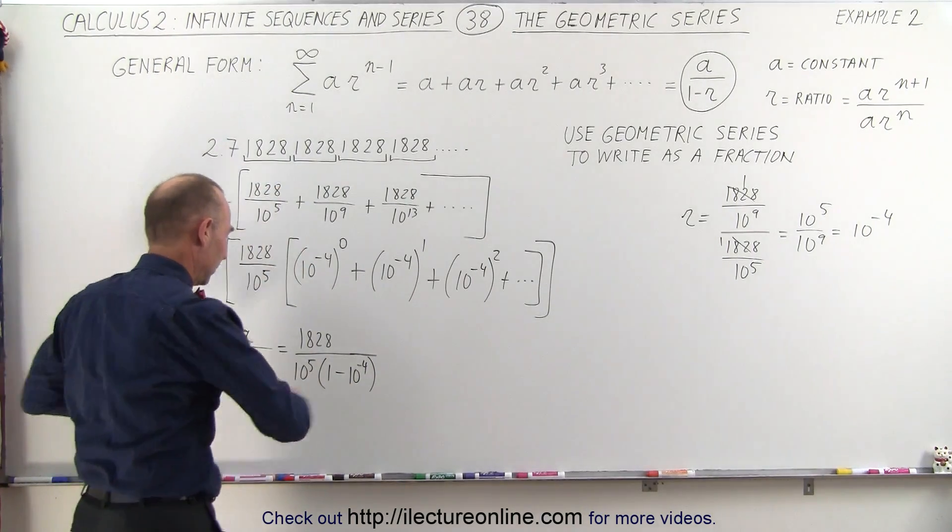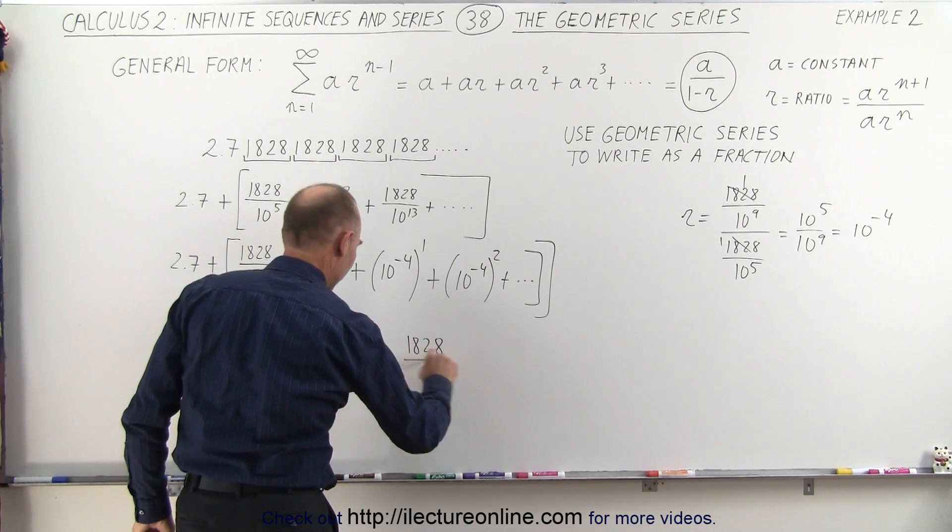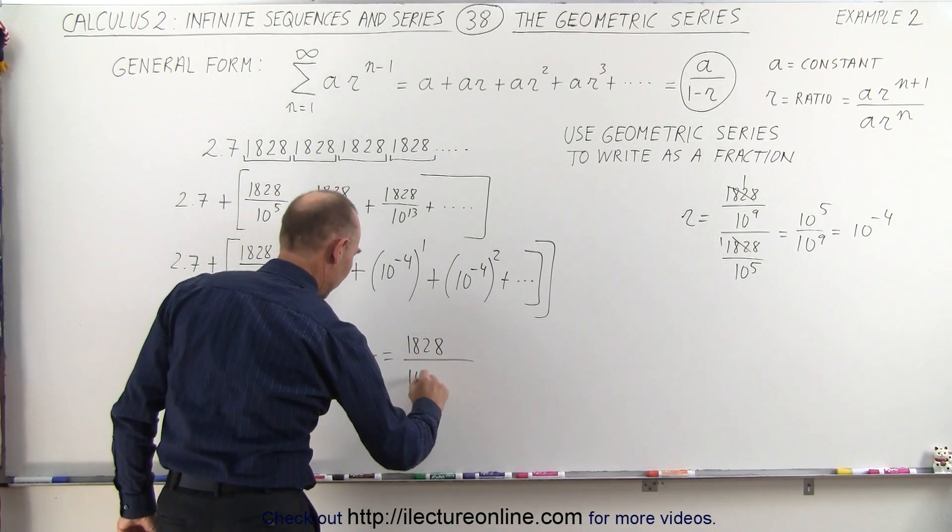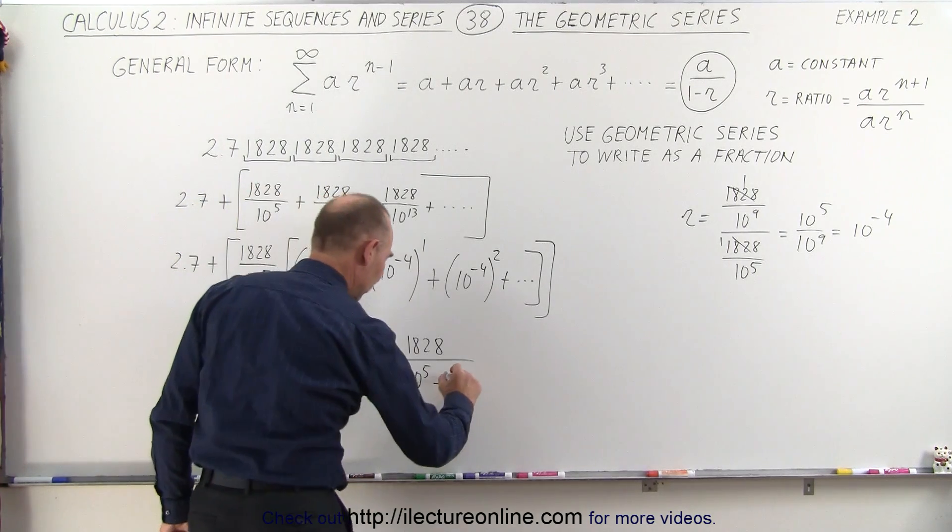Now simplifying this, this can now be written as 1828 divided by 10 to the 5th minus 10 to the 5th times 10 to the minus 4, which is equal to 10.